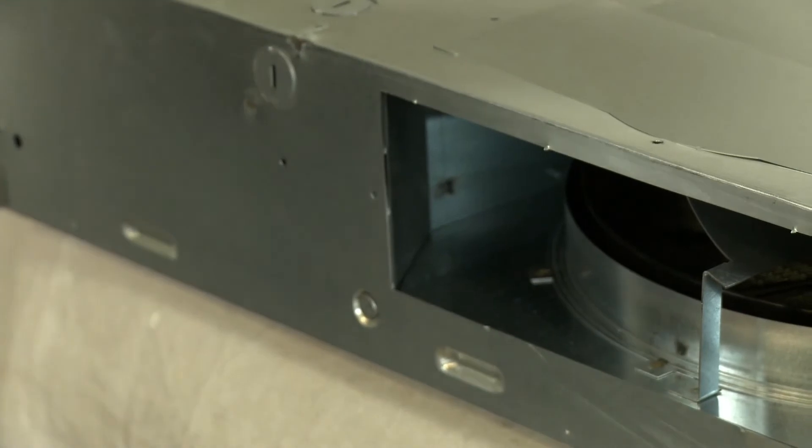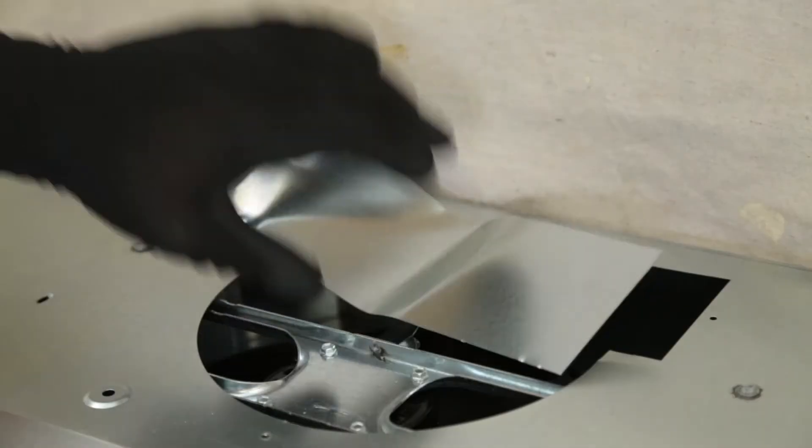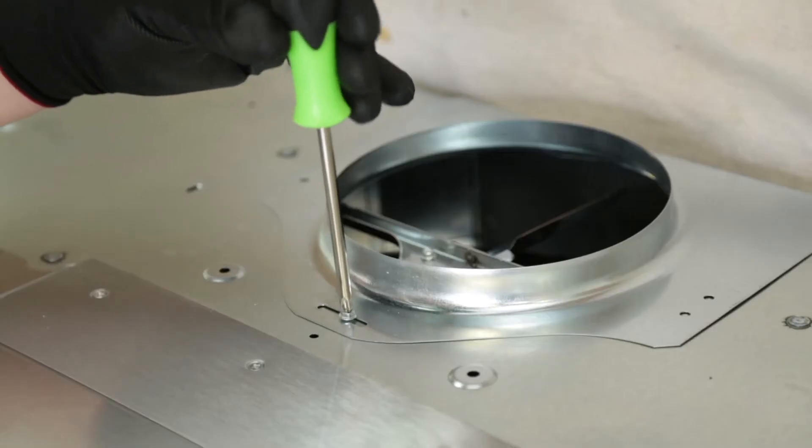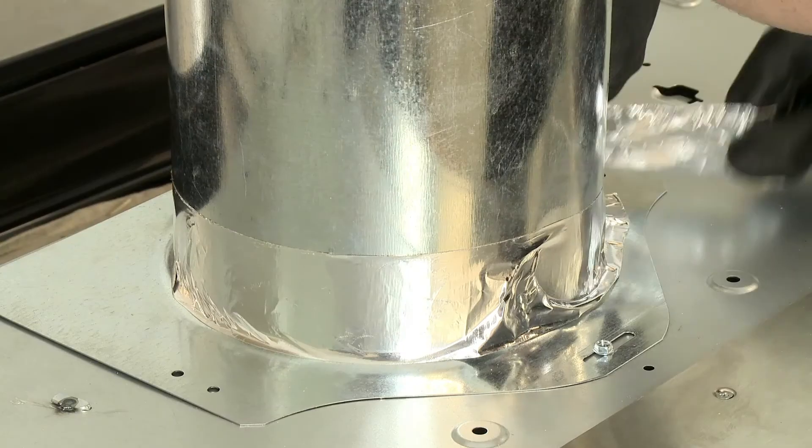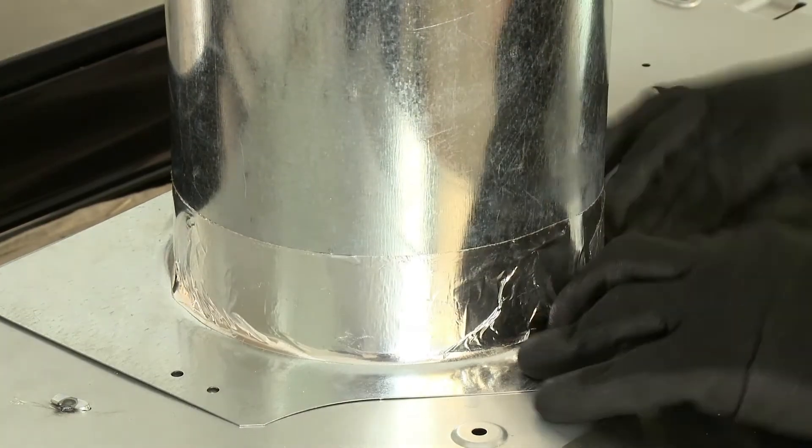For horizontal ducting using the damper, remove the rectangular knockout on the back of the hood. For vertical ducting using round duct pipe, remove the round duct knockout on top of the hood. Then, replace the duct plate and attach the duct pipe to the hood using metal foil duct tape, making sure the joint is airtight.